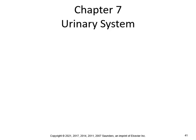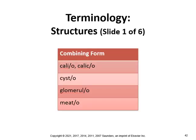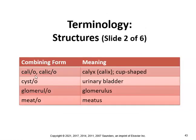Let's continue with chapter seven part two, looking at the combining forms. Cali or calic refers to a cup shape, so caliectasis would be dilation of the calyx, and caliceal means pertaining to a calyx. Cyst means urinary bladder, so cystitis would be inflammation of the urinary bladder.